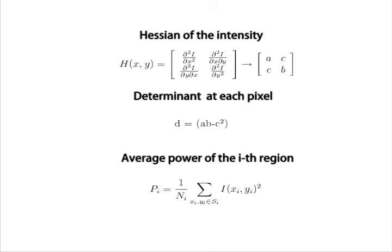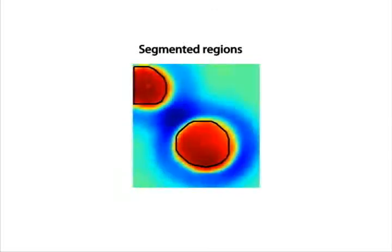This can be detected by calculating the determinant of the Hessian, which shares the sign with the product of the eigenvalues of the Hessian. Power of the intensity function of each region, where the determinant is positive combined with average power of the intensity function of each region gives a good segmentation of the vesicles.